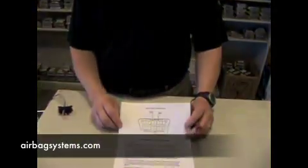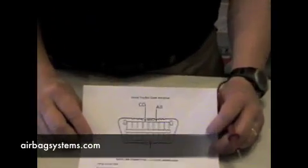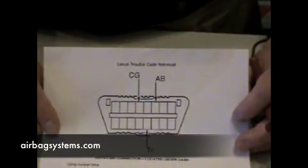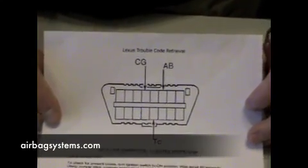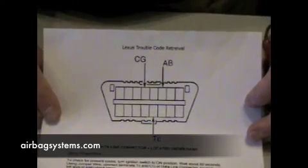Hi, we're going to show you how to test airbag codes for a Lexus and Toyota vehicle. This is a picture illustration of your data link connector underneath your dash. This is the same connector that you read the engine codes with and all the other diagnostics in your vehicle.